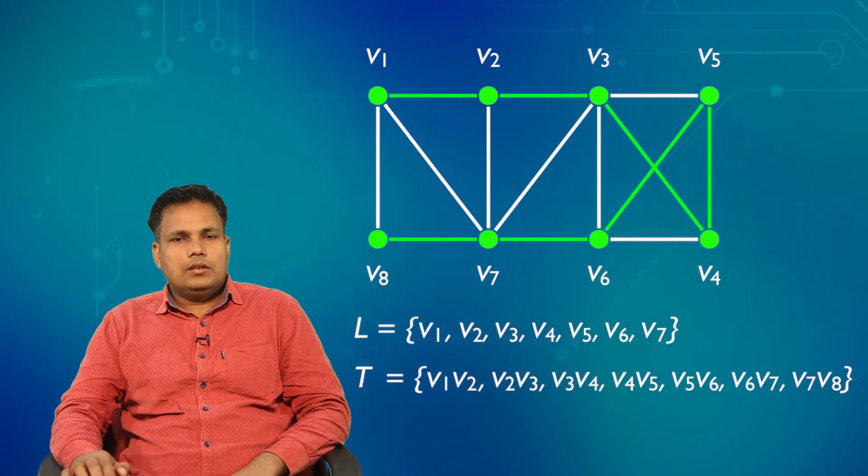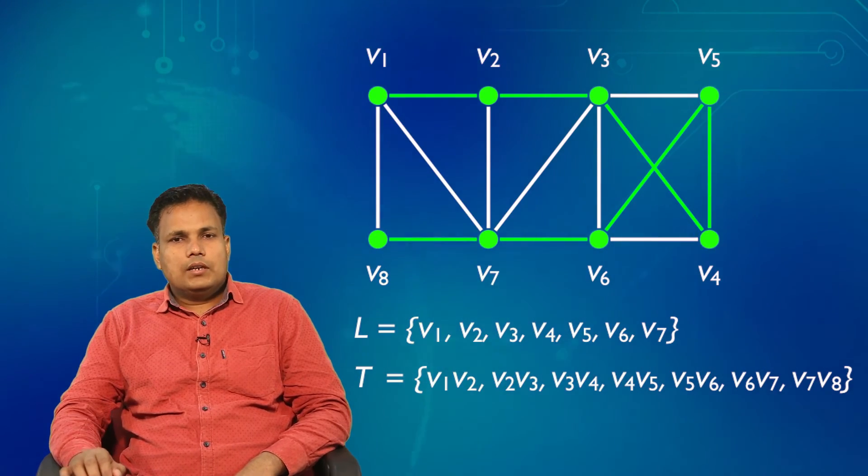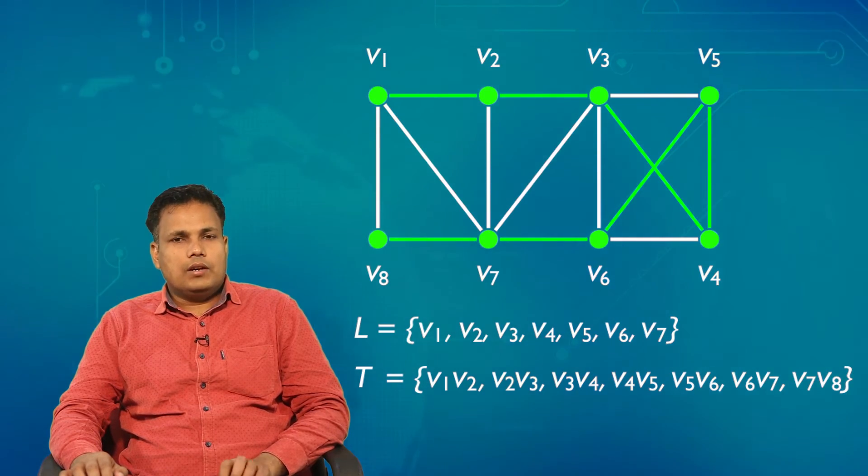One thing you must have observed is that the way we visit the neighbors of a given vertex affects the resulting spanning tree. For instance, after the root V1, suppose you visited vertex V7 — in that case the tree could be different from the one we obtained. So the order in which we visit the neighbors of a given vertex determines the actual spanning tree to be constructed.